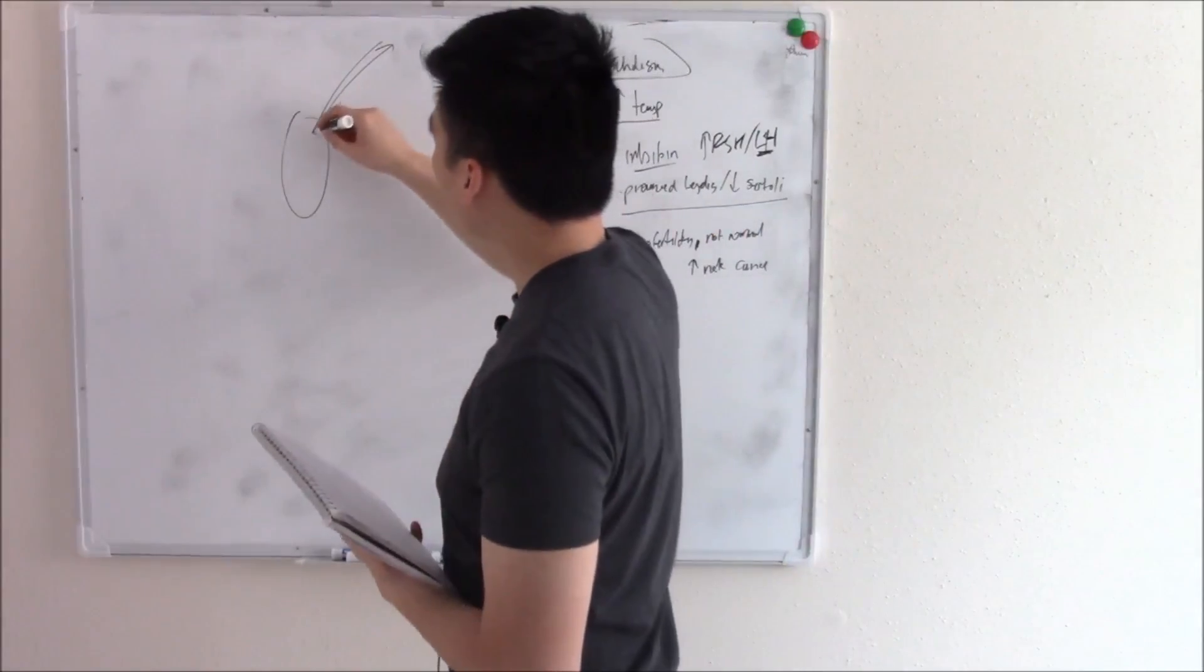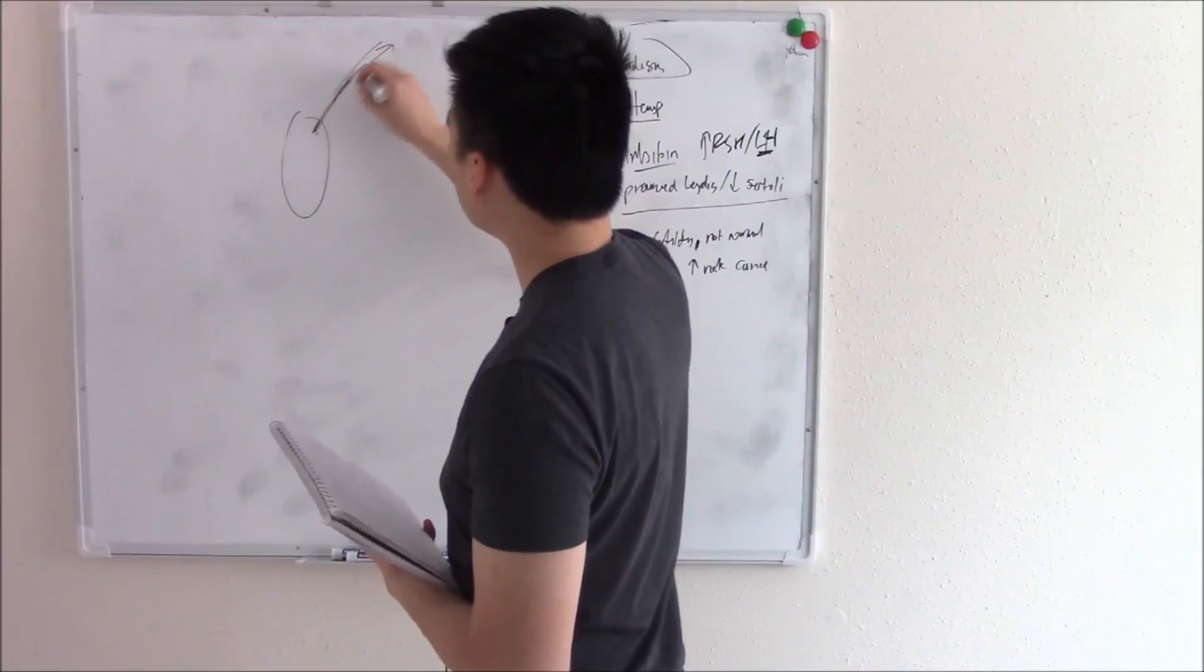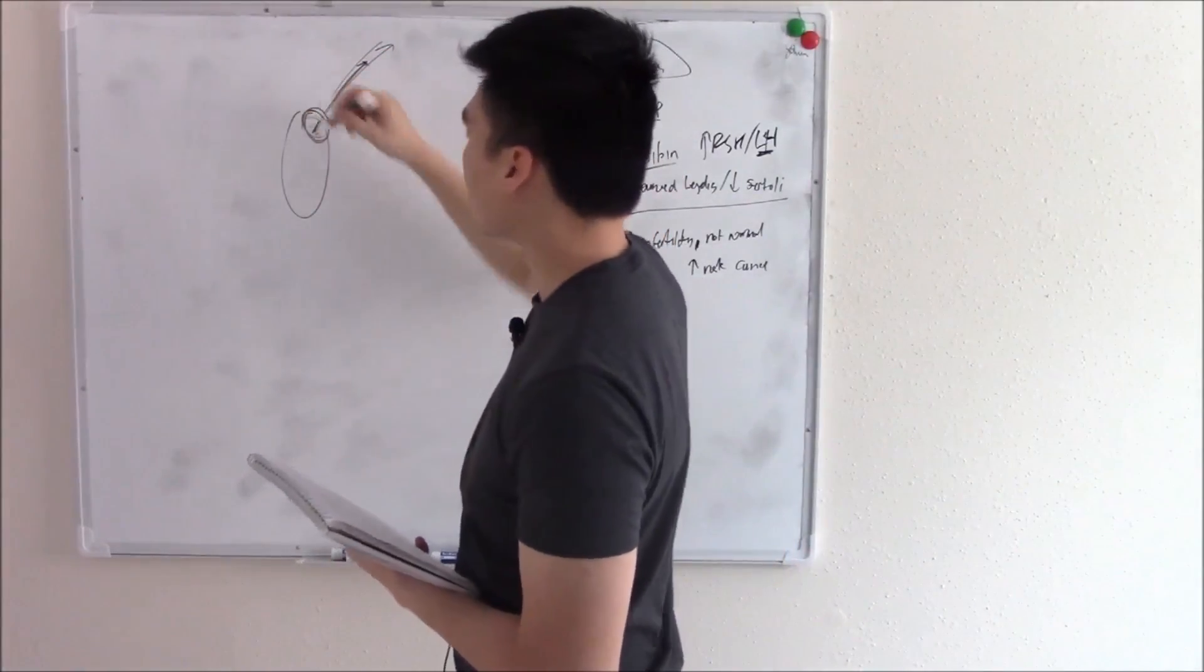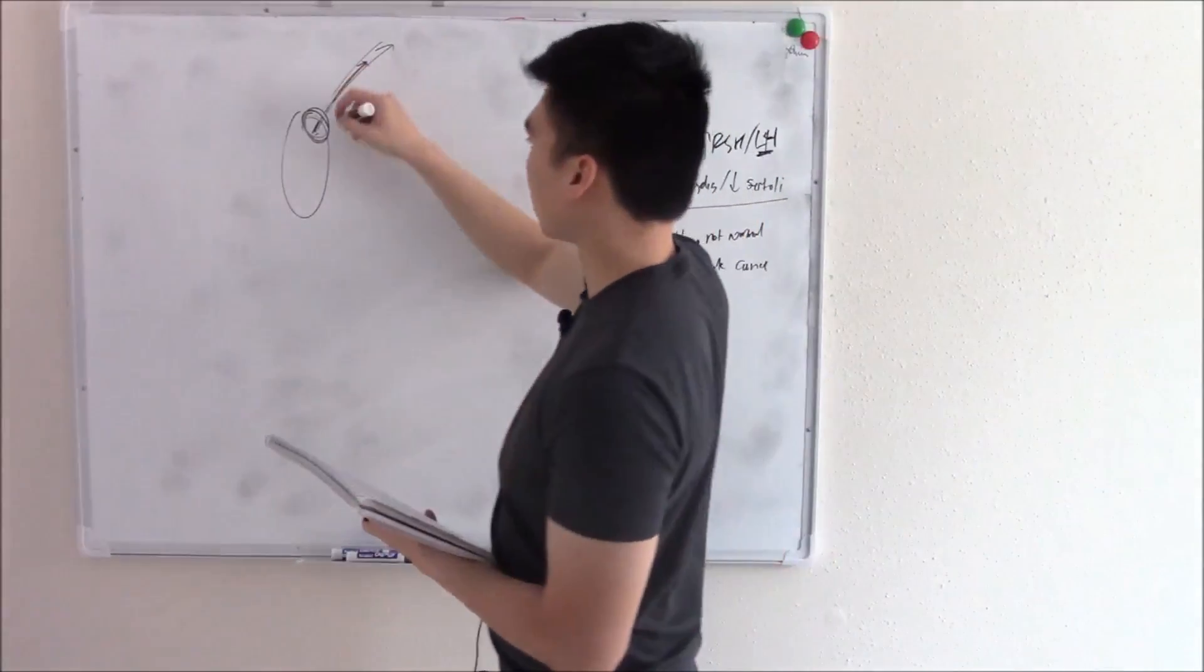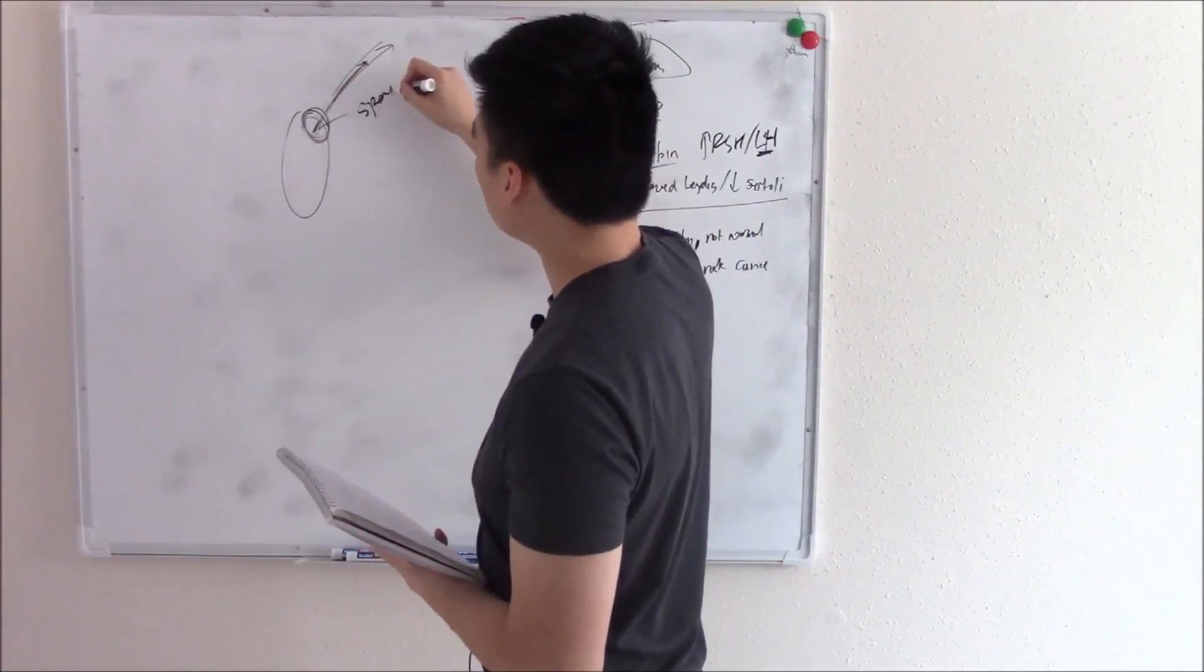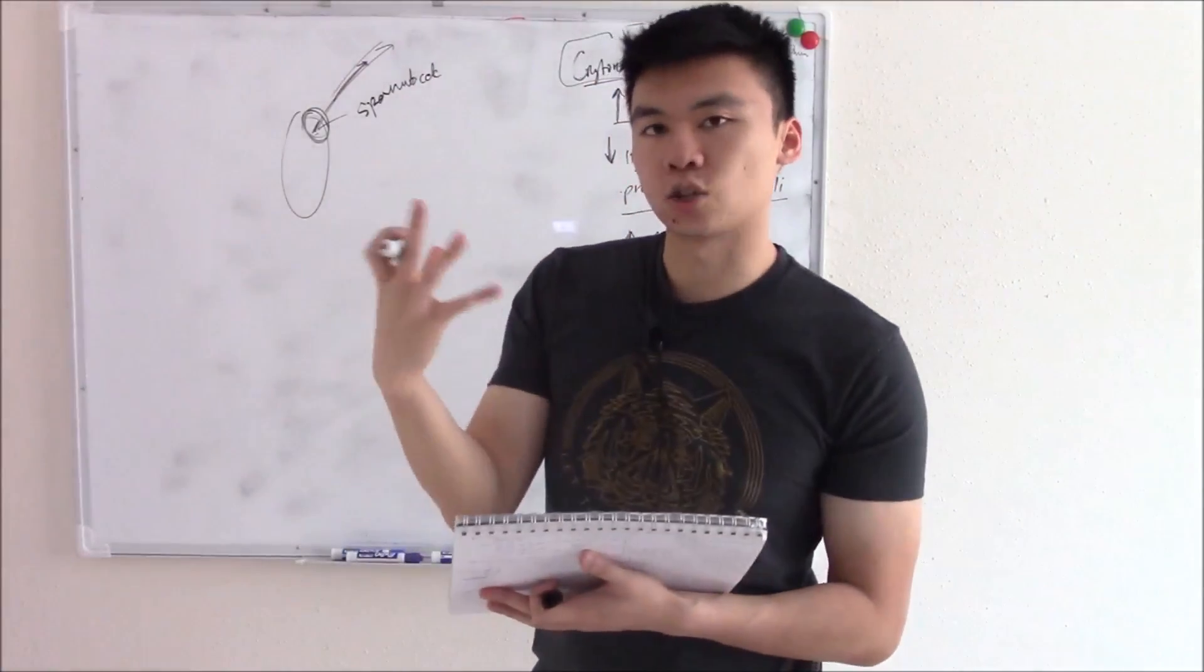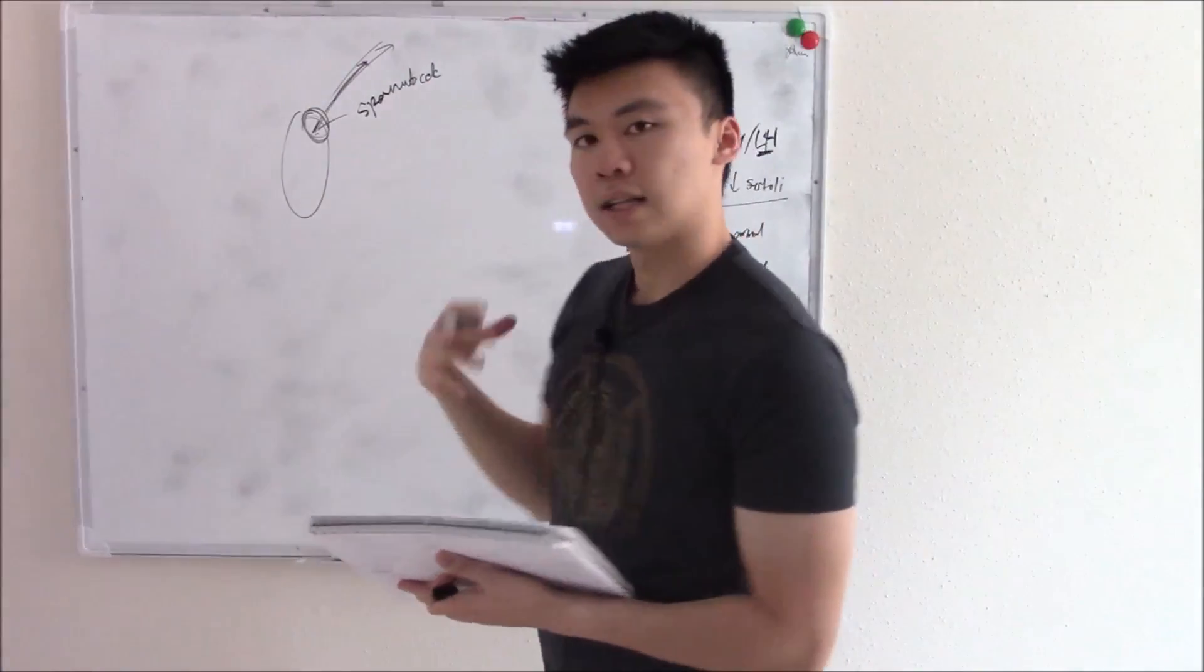So if sperm doesn't drain and leave the testes as it should, if it builds up, then you can have a pocket of semen or sperm. We call that spermatocele. And you can palpate it as this fluctuant mass right above the testes. That's your spermatocele.